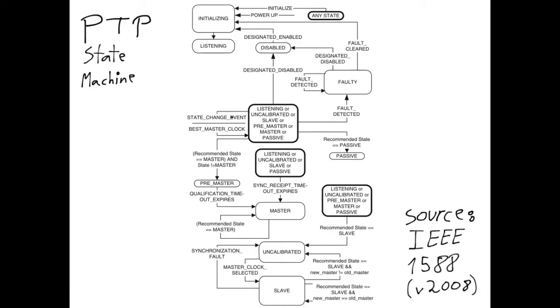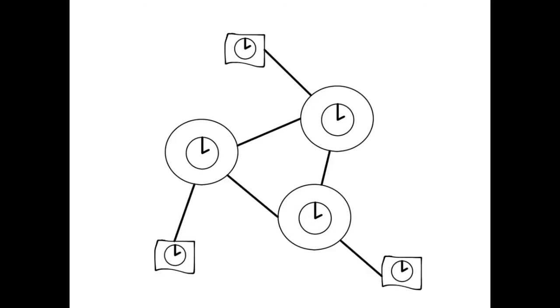Before I describe the basics of it, let's first clarify where it is executed. If we have a network made up of boundary clocks and ordinary clocks that are interconnected by means of ports, then each port executes a copy of the state machine.